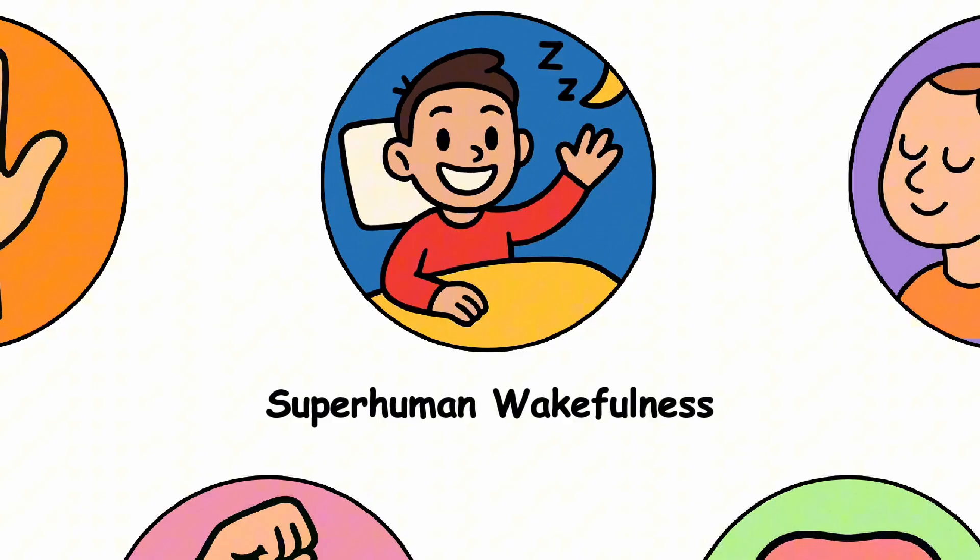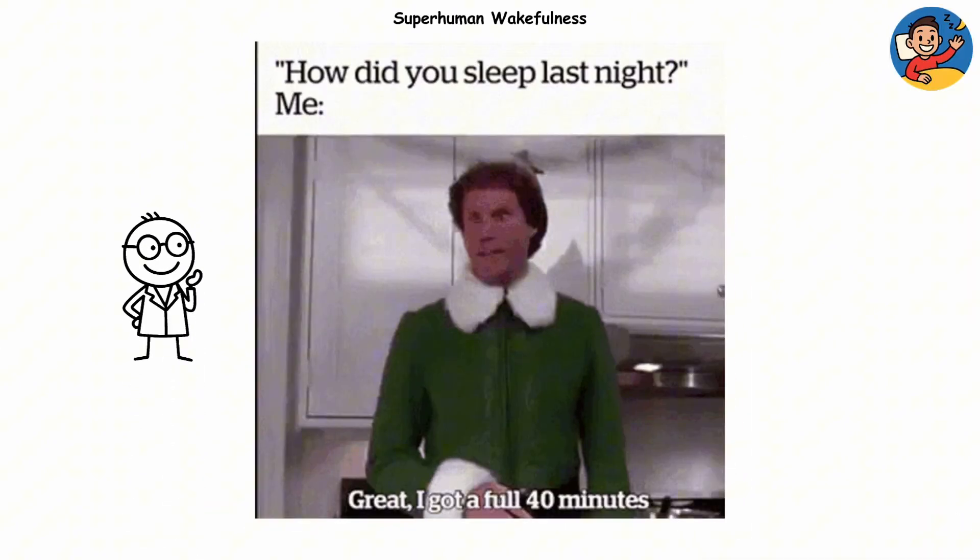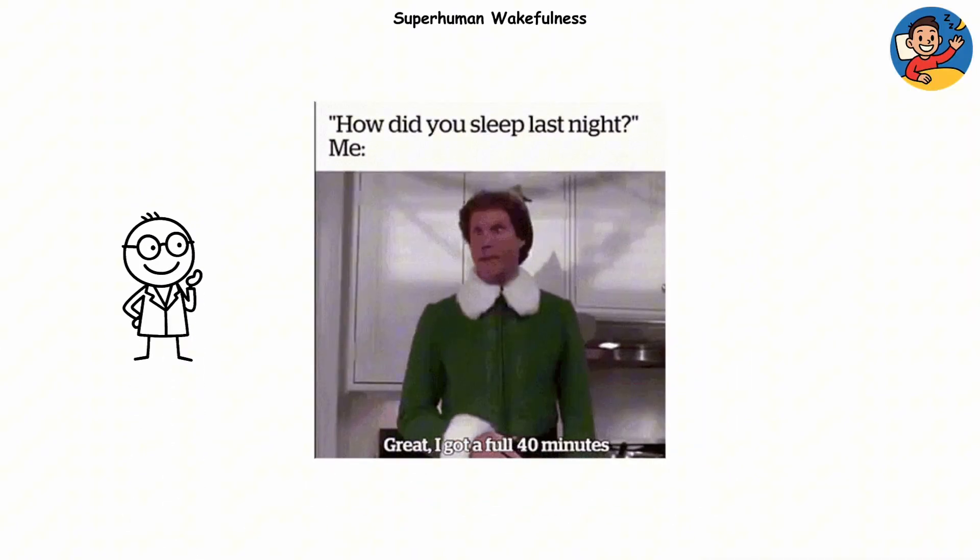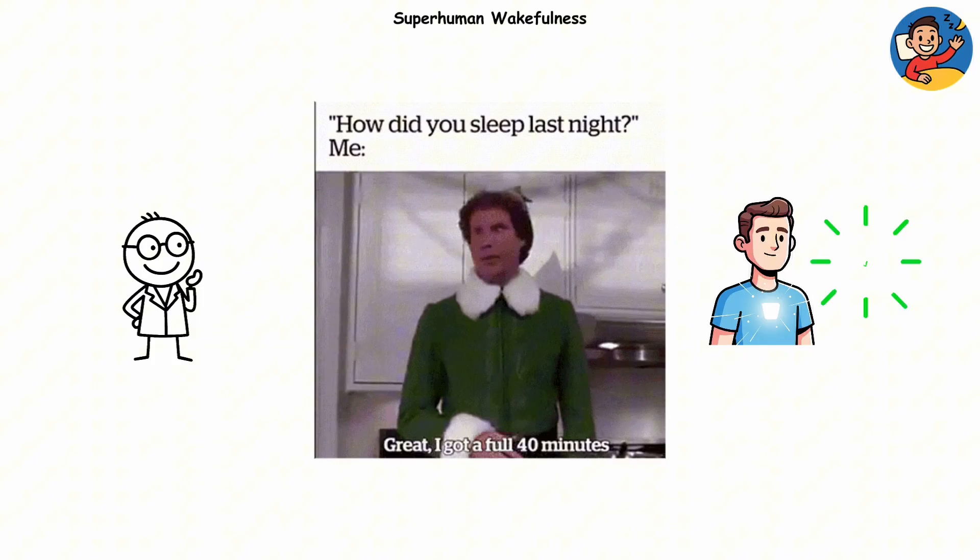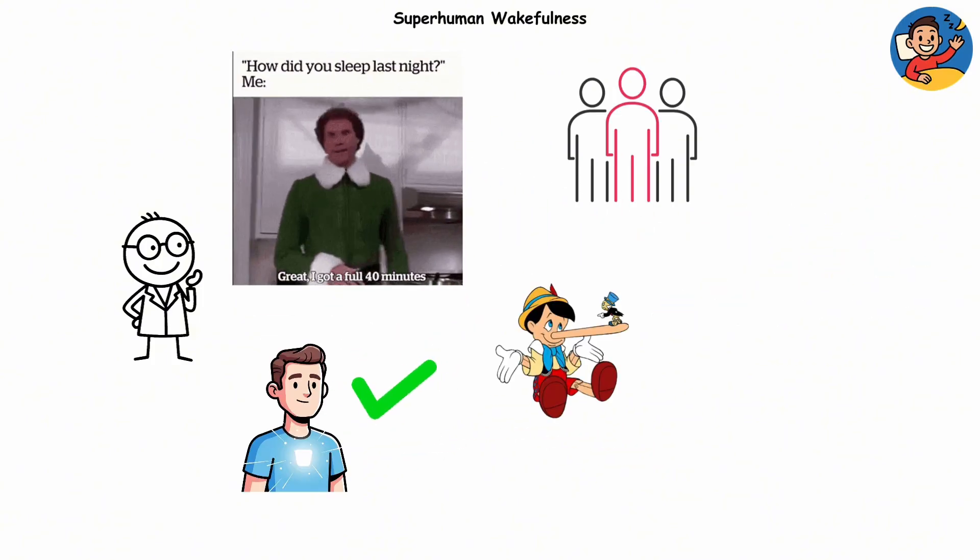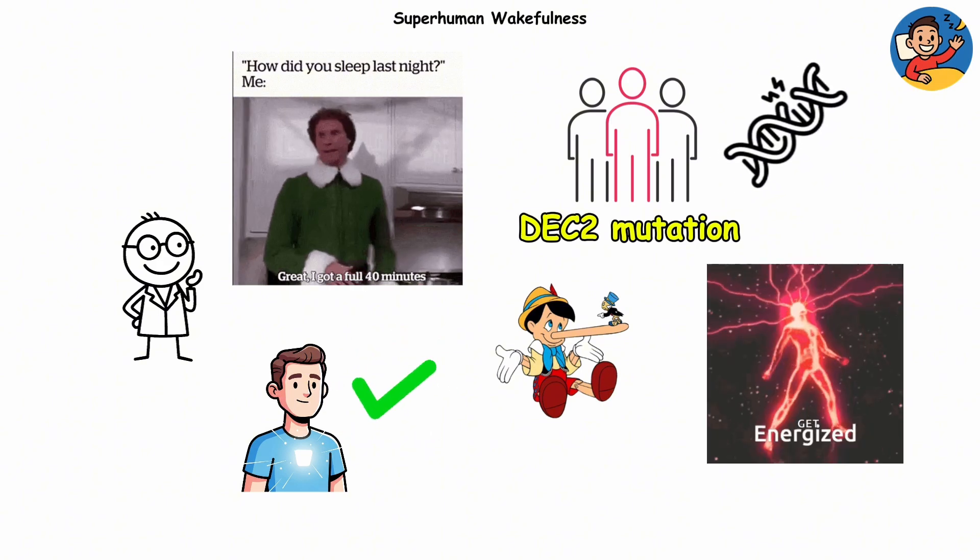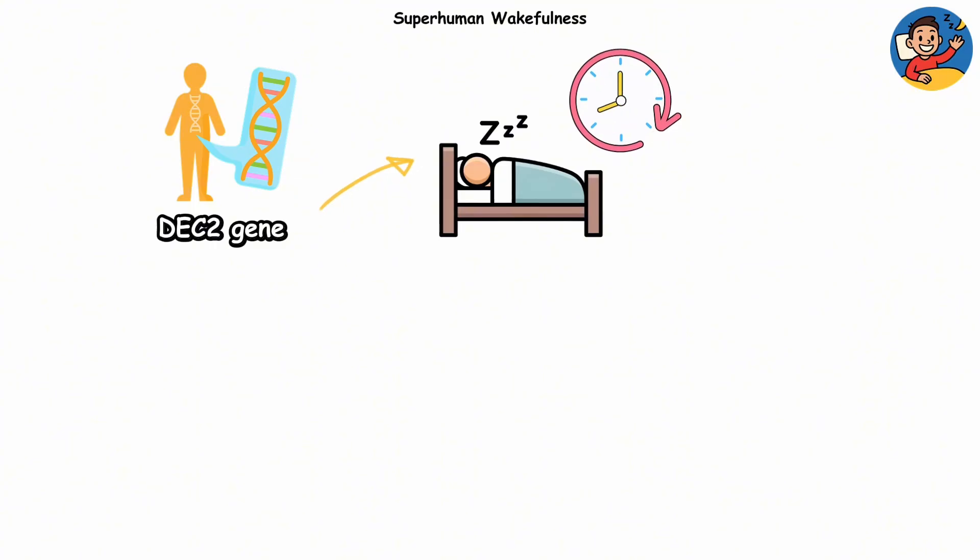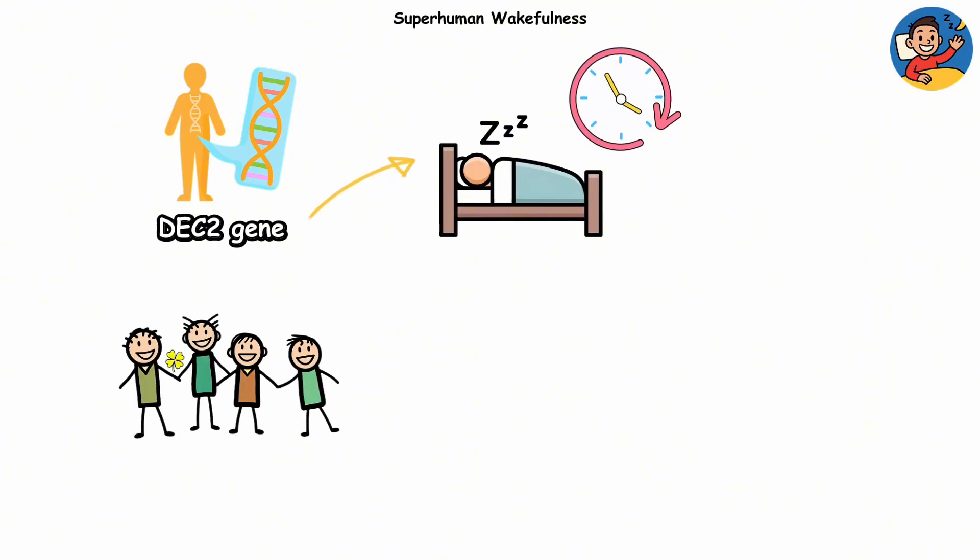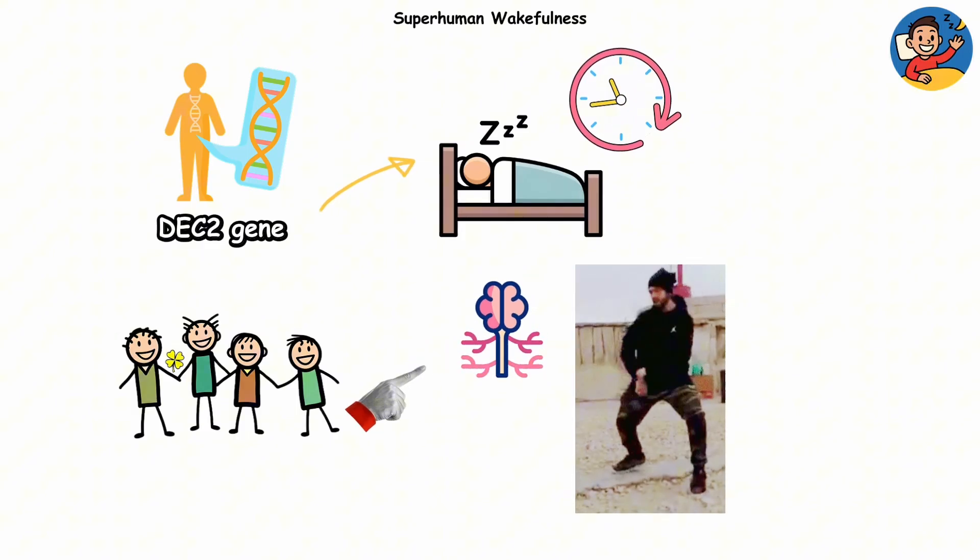Superhuman wakefulness. Ever met someone who cheerfully says, 'Oh, I only need four hours of sleep,' and somehow they're actually fine? While they're probably lying, those people might have a DEC2 mutation, the closest thing humans have to a built-in energy cheat code. Normally, your body's DEC2 gene helps regulate how long you need to recharge each night. But in a lucky few, a rare variant tweaks that system, letting them function perfectly on way less sleep.